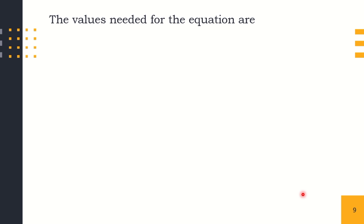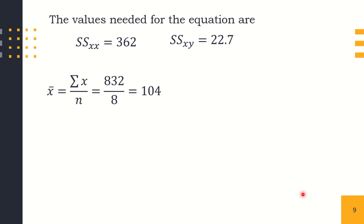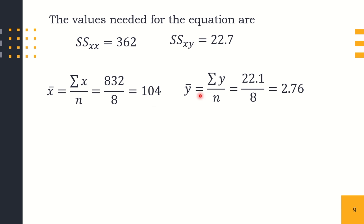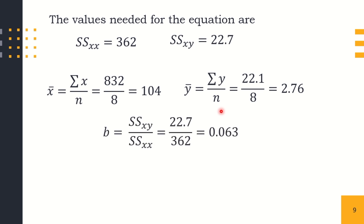Using the computed values: sum of squares of x is 362, sum of squares of xy is 22.7. The mean of x is 832 divided by 8, which equals 104. The mean of y is 22.1 divided by 8, which equals 2.76. Now we can solve for b: b equals 22.7 divided by 362, which gives 0.063. Remember to round values of a and b to three decimal places.